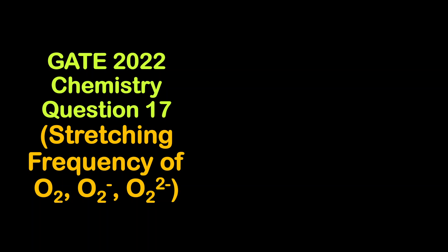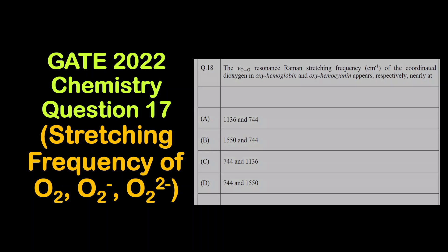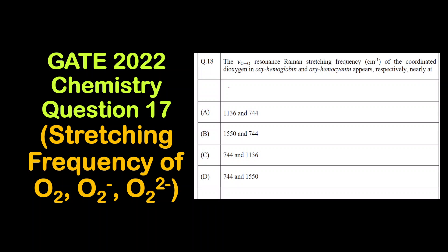In this video we are going to solve question 17 of GATE 2022 chemistry paper. The question asks about the stretching frequency of the oxygen-oxygen bond of the coordinated dioxygen in oxyhemoglobin and oxyhemocyanin, which appears nearly at what value.